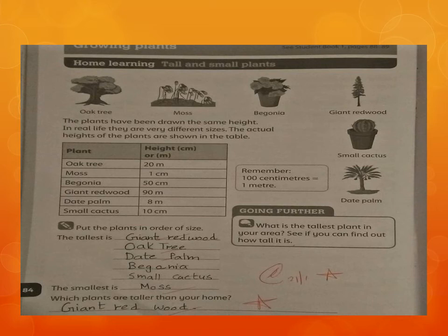The plants and their heights are: begonia is 50 centimetres tall, giant redwood is 90 metres tall — the tallest — oak tree is 20 metres tall, date palm is 8 metres tall, small cactus is only 10 centimetres tall, and moss is only 1 centimetre tall.